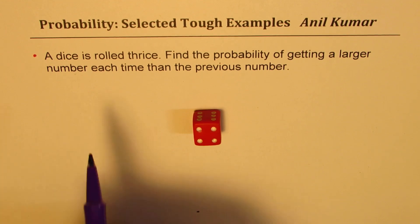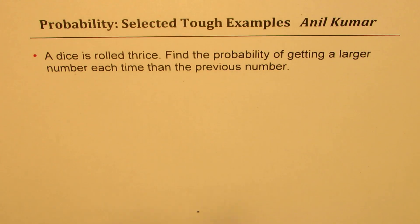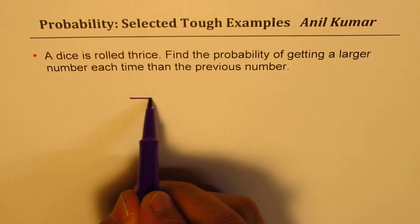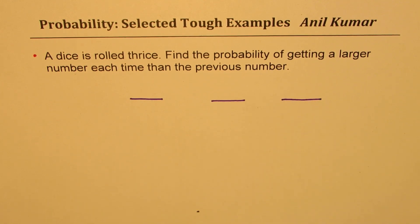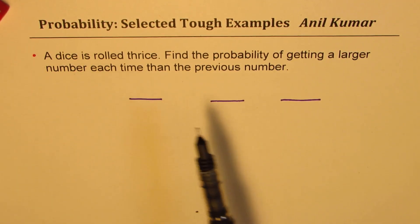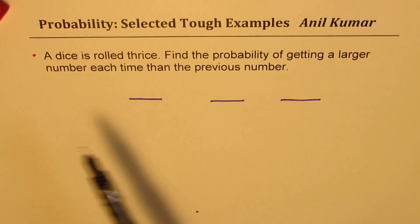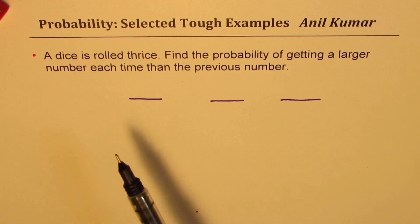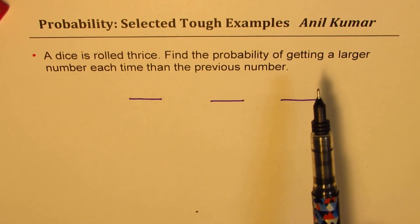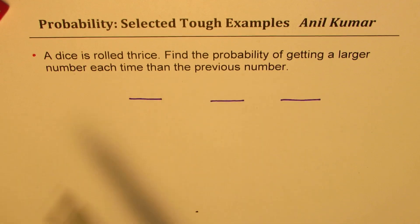So in this particular scenario, we could imagine that there are three trials. So this is one, this is the second one, and the third trial. So every time you get a higher number. So if I get, say, five, next time I should get six, and then, well, seven is not there. So with this, we cannot continue, right? We are now looking for the probability of getting a larger number each time than the previous one. So how to solve this?